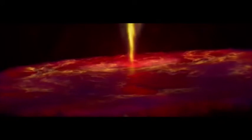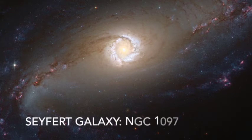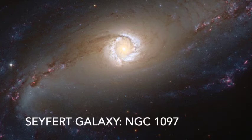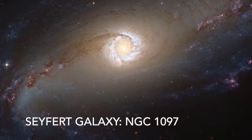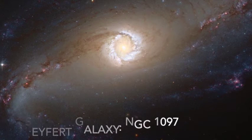An example of a Seyfert galaxy could be the Seyfert galaxy NGC 1097. A supermassive black hole with a mass of 100 million solar masses lies at the centre of the galaxy. The accretion disk, which I explained earlier, around the black hole emits large amounts of radiation from the matter falling into the black hole.